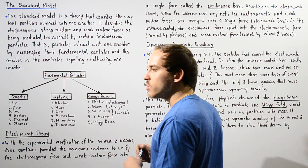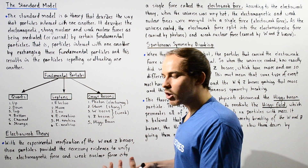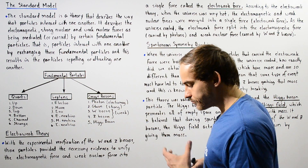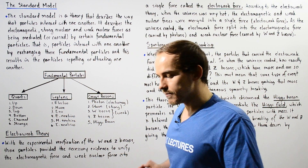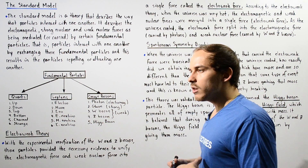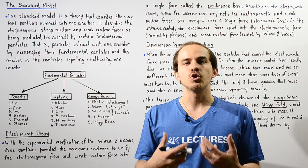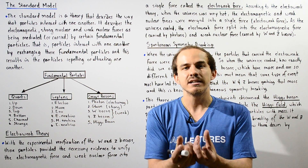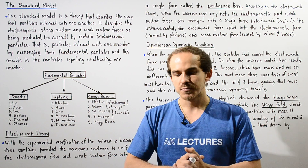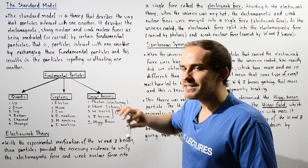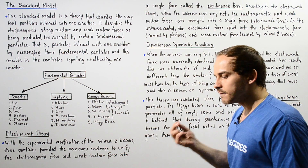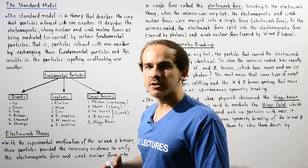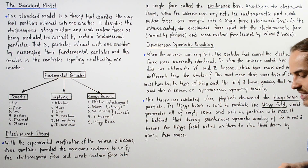Finally, we have the Higgs boson, a particle said to carry or mediate the Higgs field, which we'll discuss in a moment. Moving on to the electroweak theory — the electroweak theory combines and unifies the electromagnetic force and the weak nuclear force into a single force known as the electroweak force. The discovery and experimental verification of the W and Z bosons, and later the Higgs boson, led to the validation of the electroweak theory.